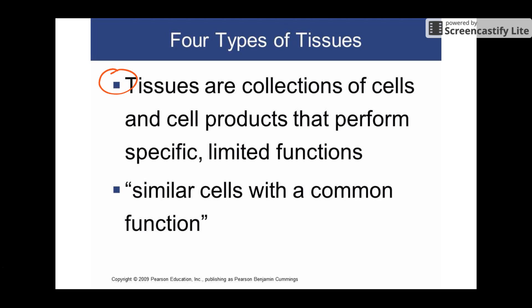That's kind of your textbook definition. The one that I tend to use a little bit more is this one at the bottom here — it's a group of similar cells, so they all look kind of the same, and they work together for a common function. So that's generally what you find is a tissue: a bunch of cells that look about the same and they work together for a common function.